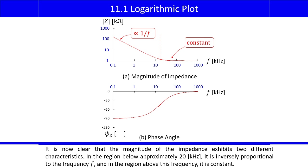It is now clear that the magnitude of the impedance exhibits two different characteristics. In the region below approximately 20 kHz, it is inversely proportional to the frequency f, and in the region above this frequency, it is constant.